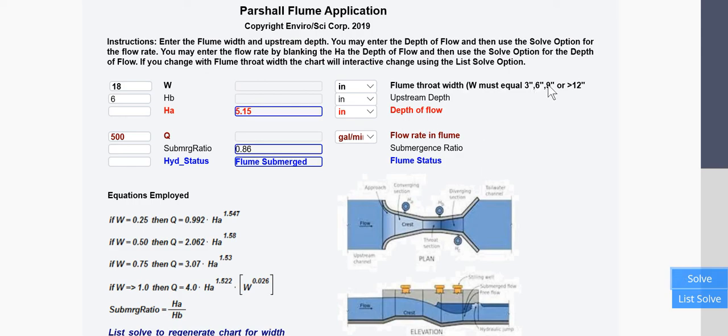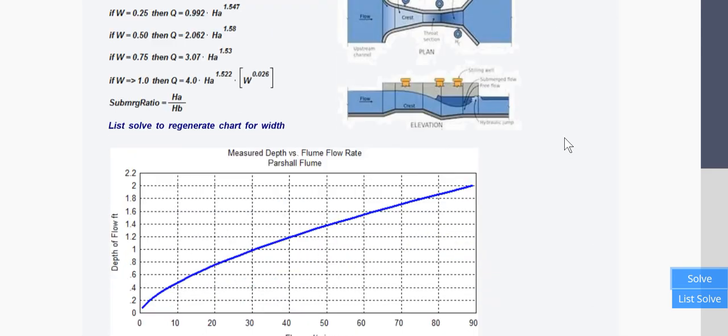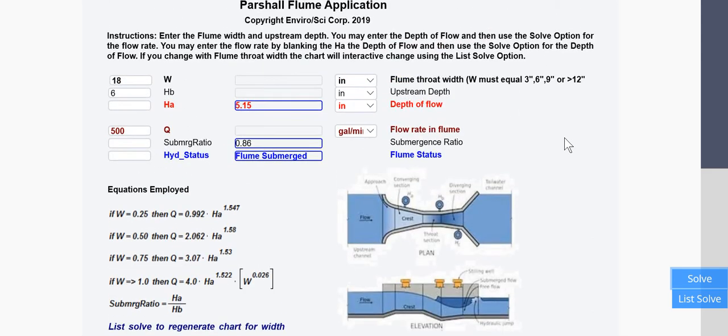The flume values have to be three, six, nine, or 12 inches or greater. Values in between will give you an error. There is a chart for the flume right now. That chart is for an 18 inch flume.